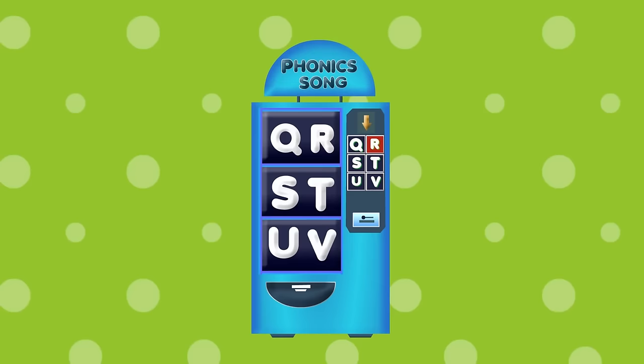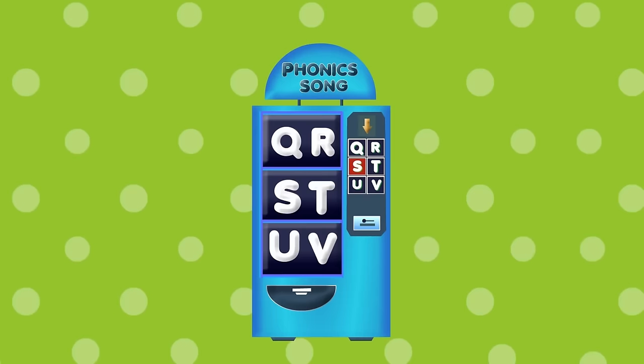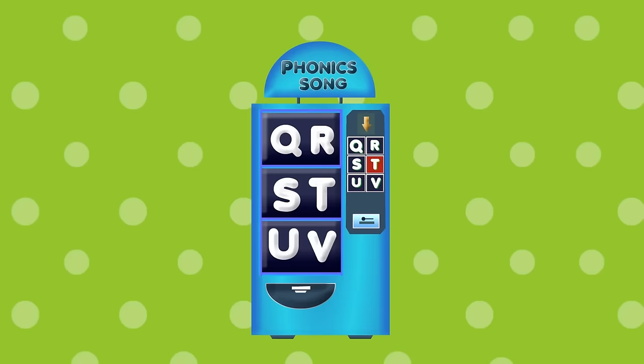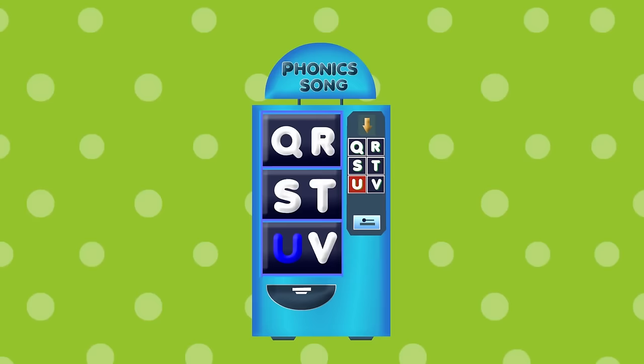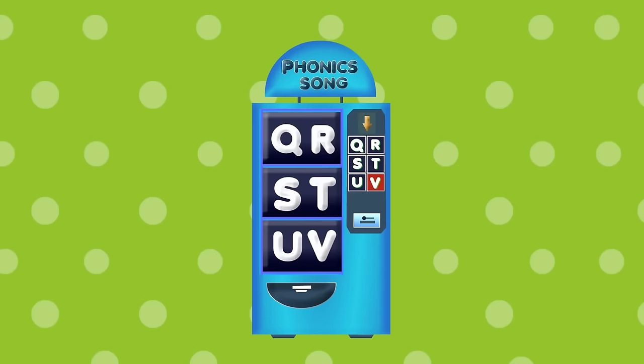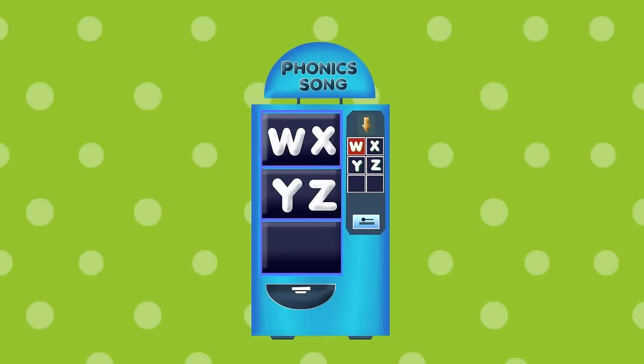Q for question mark, p-p-p-question mark. R for rabbit, r-r-rabbit. S for sun, z-z-sum. T for teddy bear, t-t-t-t teddy bear. U for uniform, u-u-u-uniform.